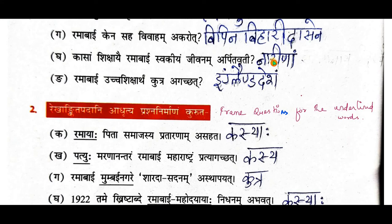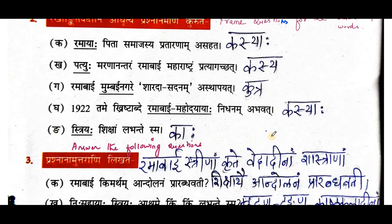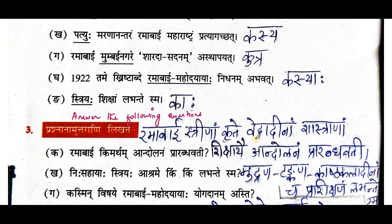After whose death did Ramabhai come to Maharashtra? After her husband's death — so kasiya should be the question. Third sentence: ramabhai mumbayi nagari sharada sadhanam asthapayat — the underlined word is mumbayi nagari, so kutra should be used. Fourth sentence: 1922 tamay krishtabdi ramabhai mahodayayaha nidhanam abhagat — underlined word is ramabhai mahodayayaha, so kasiyaha should be used. Fifth sentence: striyaha siksham labhantesma — underlined word is striyaha, so kaha should be used.